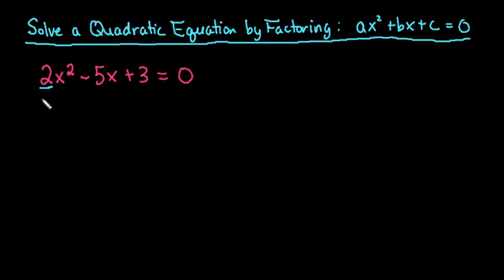Remember with factoring, we're trying to figure out which two binomial expressions I multiplied together to get this value. When I do that, I can use the zero product property, which says that if I have one factor times another factor and the product is zero, one of those factors must be zero.